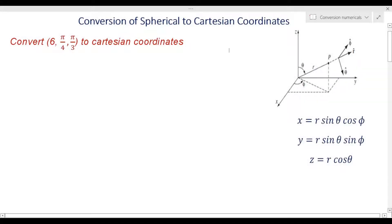Hello and welcome to our channel Scholars Edu Guide. This video is a continuation of our previous video on spherical to Cartesian coordinates. Those who have not watched that video, the link is provided in the description box. Spherical coordinates are represented by the coordinates r, theta, and phi.